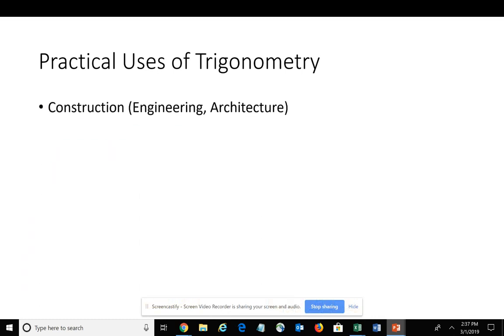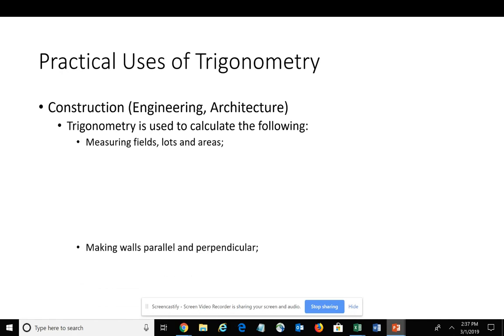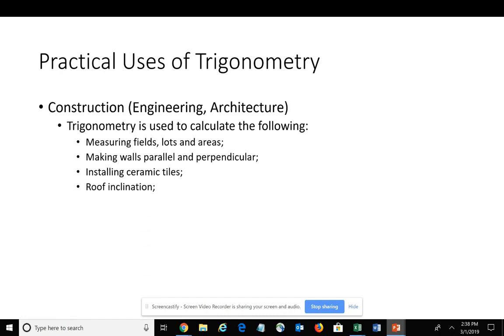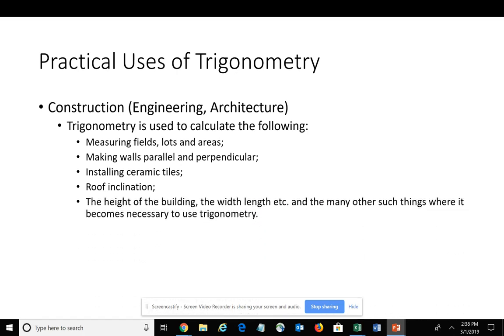You also use lots of trigonometry within construction, which includes engineering and architecture. Trigonometry is used to calculate the measurement of different fields or lots or areas, making sure that the walls of a particular building are parallel and or perpendicular, installing ceramic tiles, roof inclination, and determining the height of a building and its width and length where it becomes necessary to use trigonometry.